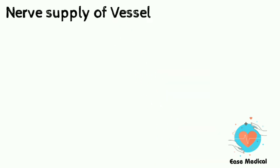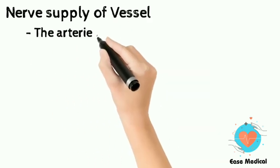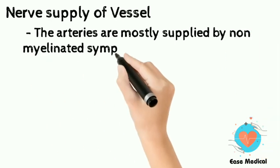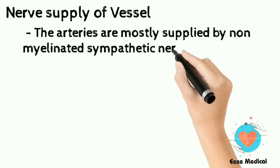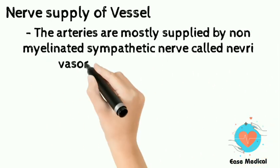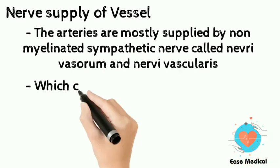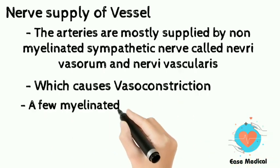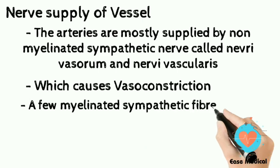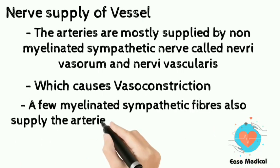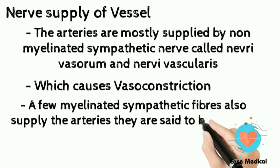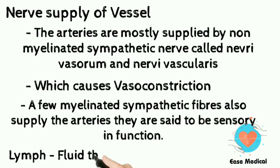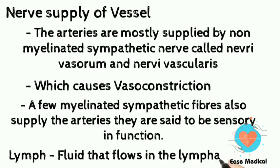The arteries are mostly supplied by non-myelinated sympathetic nerves called nervi vasorum and nervus vascularis, which cause vasoconstriction. A few myelinated sympathetic fibers also supply the arteries and are said to be sensory in function. Lymph is the fluid that flows in the lymphatic system.